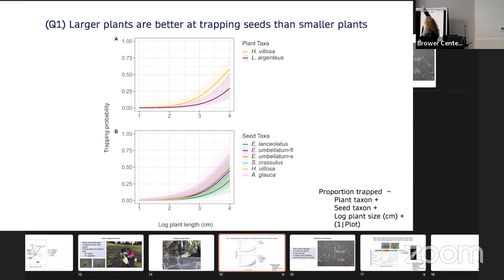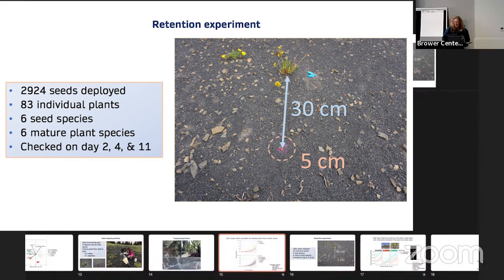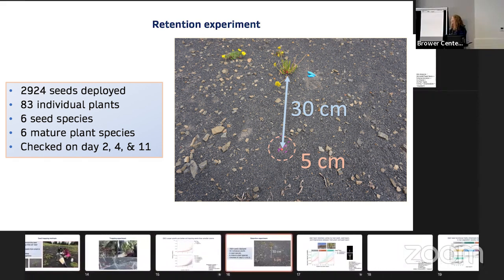We see some differences, especially at larger sizes between the Heterotheca and the Lupinus in terms of trapping. Those results didn't end up being significant, maybe with additional replication we might be able to tease out some of that signal from the noise. Really interestingly though, we had very little differentiation among seed species in terms of how well they were trapped. So that's one side of the coin: seeds hitting the plant and are they stopped in their path? The next part is how well are they retained?